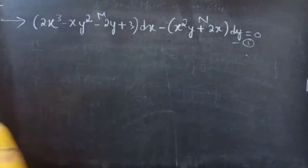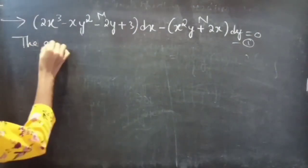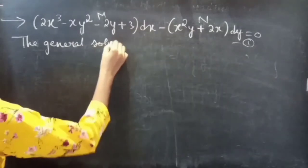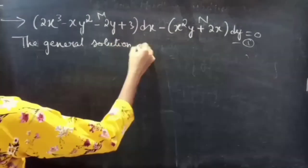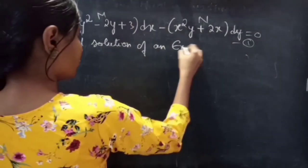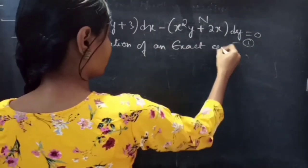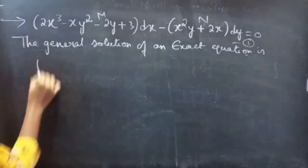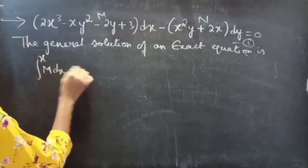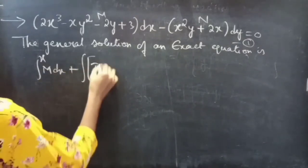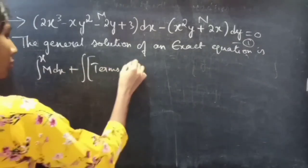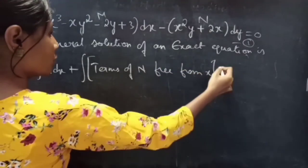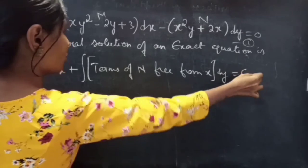We know that the general solution of an exact equation is given by: ∫(over x) M dx + ∫(terms of N free from x) dy = constant.